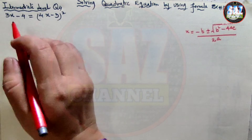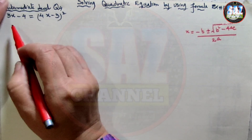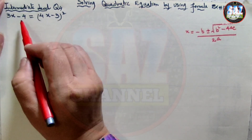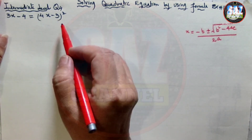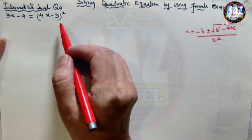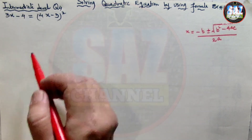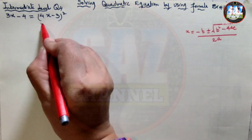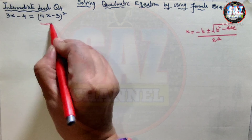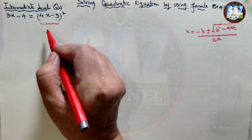Let's move to the question. The question is: 3x minus 4 equals (4x minus 3) whole squared. The equation given to us is not in the form of the standard quadratic equation, so first of all we have to convert it into standard form.